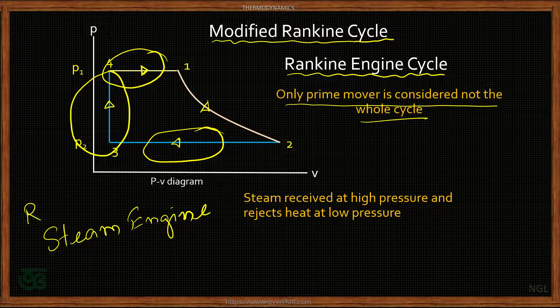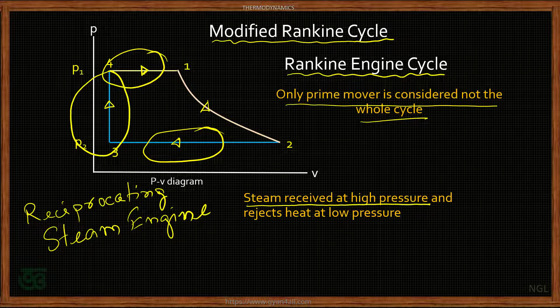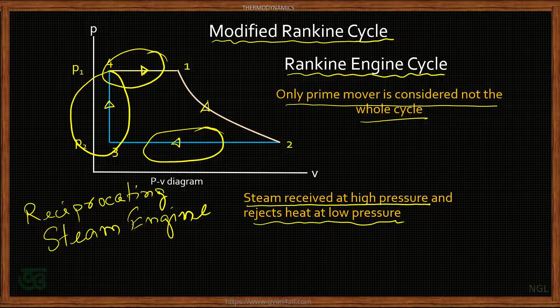In a reciprocating steam engine, steam is received at high pressure. High pressure, high temperature steam enters inside the cylinder and pushes the piston from TDC to BDC — that is the work done. In the next stroke, while the piston moves from BDC to TDC, the steam is exhausted from the cylinder, and that we call the rejection of heat at low pressure.